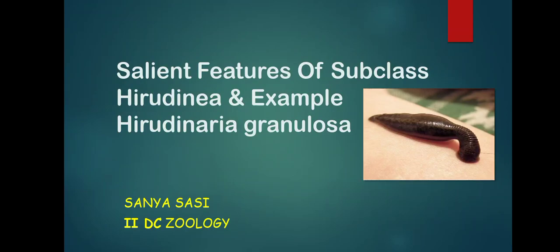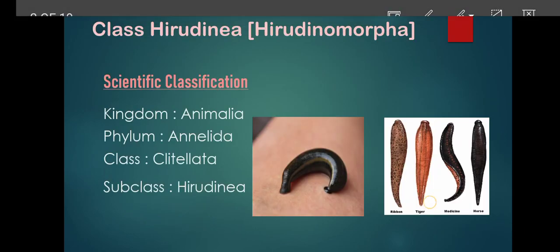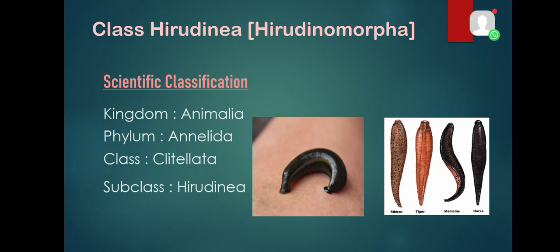We are going to discuss the salient features of subclass Hirudinia and example Hirudinaria granulosa. Let us look at the scientific classification of Hirudinia: kingdom Animalia, phylum Annelida, class Clitellata, subclass Hirudinia. The term comes from the Latin word 'hirudo', referring to leeches. Hirudinia includes 3500 species.